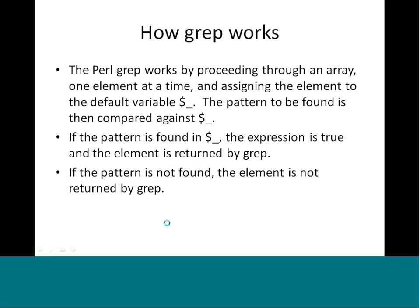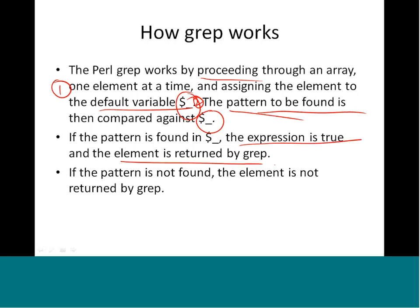Grep works by proceeding through an array one element at a time, assigning the element to the default variable $_ which we already know about. The pattern to be found is then compared against $_. First, one element is assigned to the default variable, then the pattern is compared against $_. If the pattern is found, the expression is true and the element is written by grep. If the pattern is not found, the element is not written. This way we can accumulate matching elements in an array.